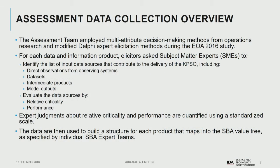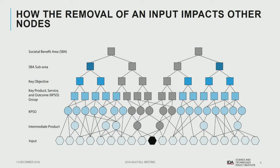During elicitations with experts, we went to each provider of key products, services, and research outcomes and asked them to identify all their inputs, quantifying both their reliance on that data source and the performance of that data source. We built all that information into a network — tree-like on the top and web-like on the bottom — where a single Earth observation input at the bottom of the value tree might feed into multiple intermediate products, which in turn feed into multiple key products, services, and outcomes.